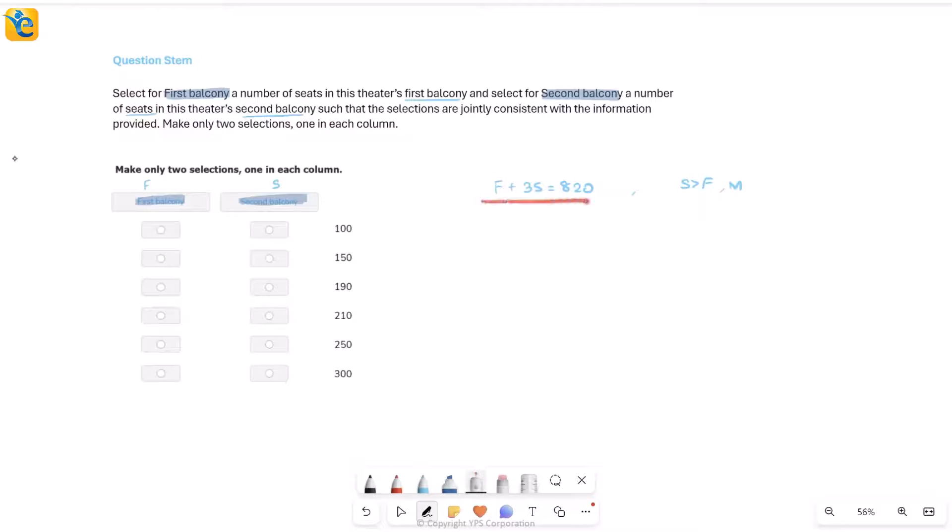Now we have f + 3s = 820, two unknowns, one single equation. I just have to see which pair of values will work here such that the pair satisfies both the equation and the constraint. Now instead of directly jumping into every single value, I see that 3s is a multiple of 3, while 820 is not a multiple of 3. What is it that I would have added to a multiple of 3 so that it turned into something which is not a multiple of 3? I can infer for sure that f is not a multiple of 3.